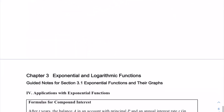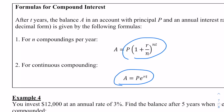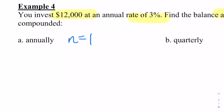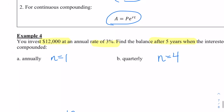Now let's consider compound interest. This looks very similar to Euler's number — that idea of compounding and natural growth. When something is being compounded continuously, we use base E to find that amount. Let's look at four different scenarios: $12,000 invested at an annual rate of 3%, finding the balance after five years compounded in different ways. Compounded annually means n equals 1; quarterly means n equals 4; monthly means n equals 12; and continuously uses Euler's number.